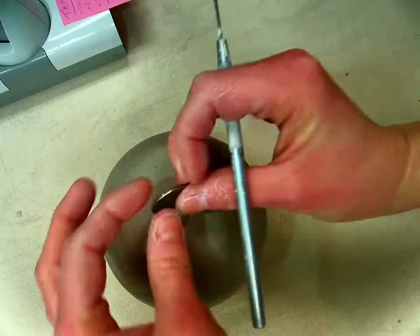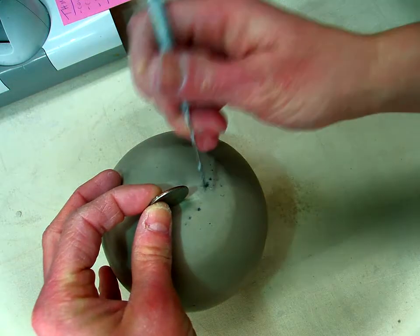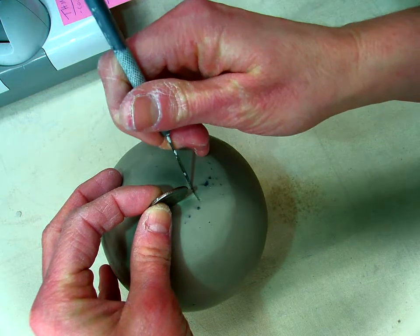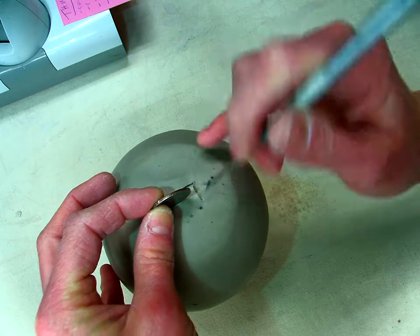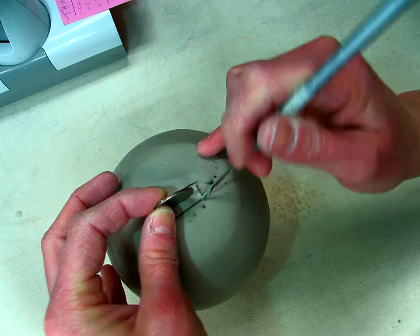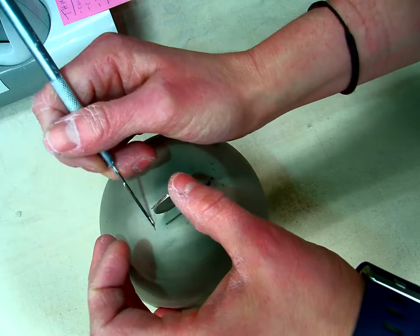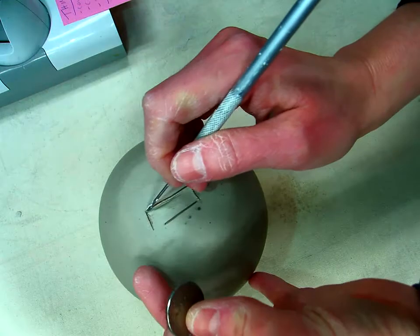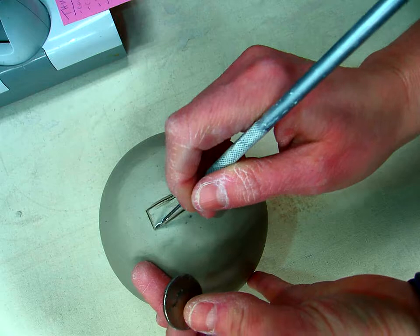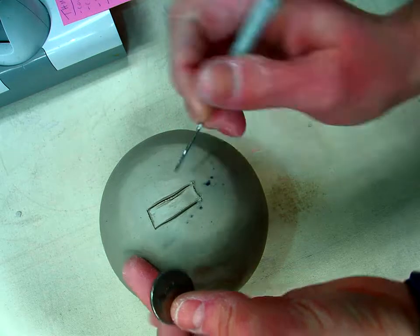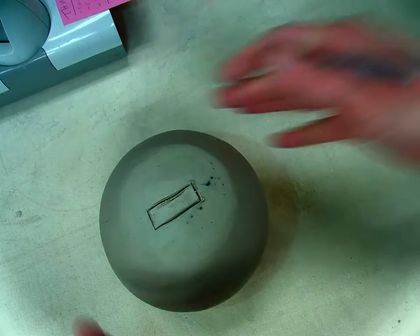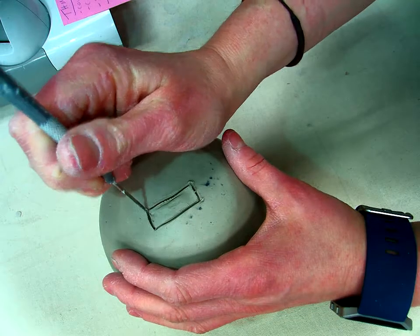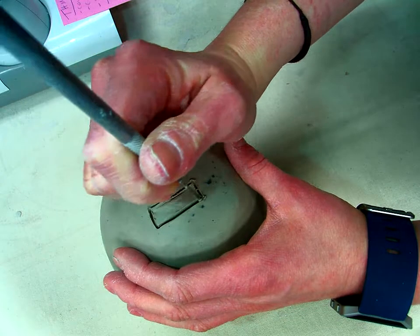And then what you're going to do is hold the coin and you're just going to kind of cut around it. Because keeping in mind that the clay shrinks as it dries. And you want to try and get it as rectangular as you can. And you can kind of start the shape.